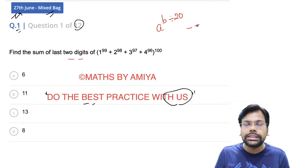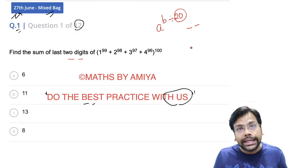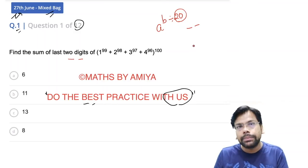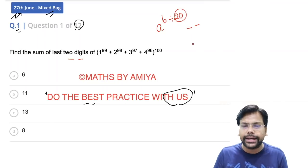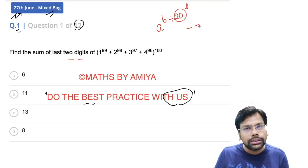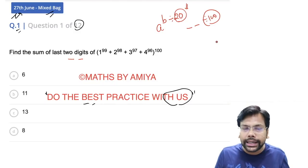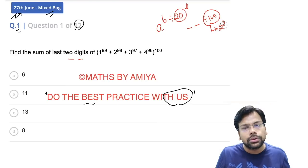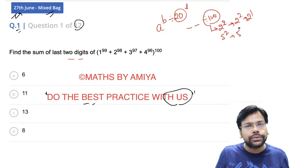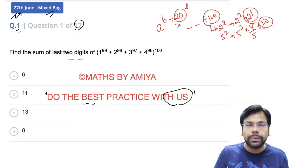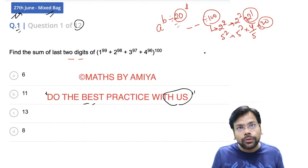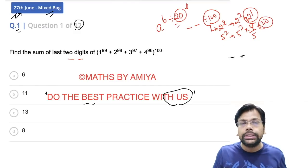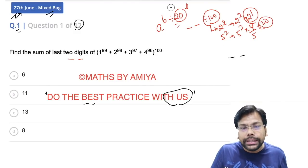Why? Because the last two digits cyclicity of any number is 20. What do you mean by cyclicity? Some numbers may repeat up to 10, but some numbers may repeat by 20. Last two digits is nothing but remainder by 100. The cyclicity of 100 is 2 squared and 5 squared. So the Euler's totient function gives us 20. You must remember this.